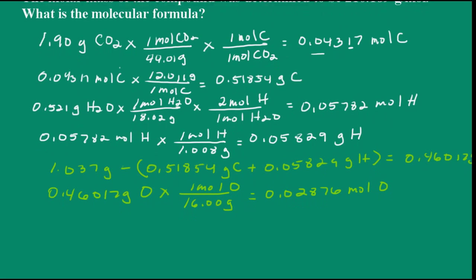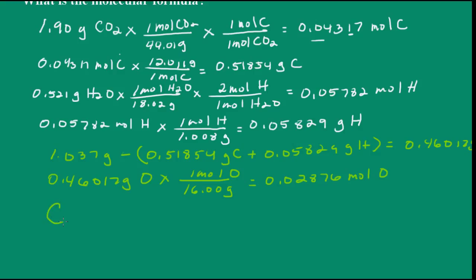Now we can write our empirical formula. We have carbon at 0.04317 moles, hydrogen at 0.05782 moles, and oxygen at 0.02876 moles. We're going to divide each one of these by the lowest, which is 0.02876. For carbon we end up with 1.5, hydrogen gives us 2, and oxygen is 1.